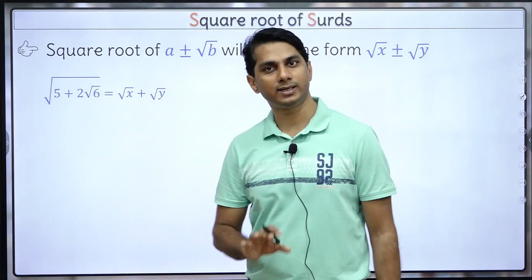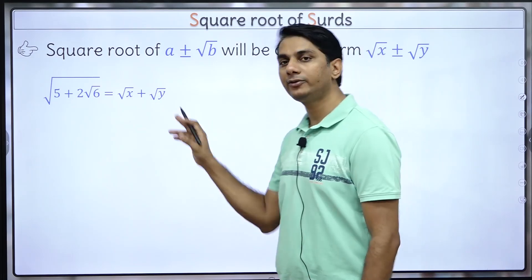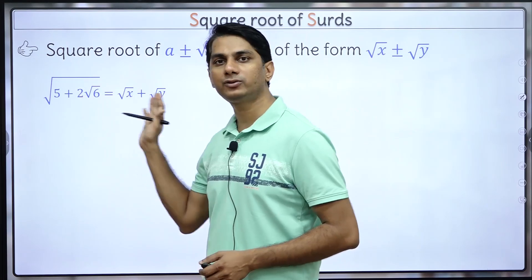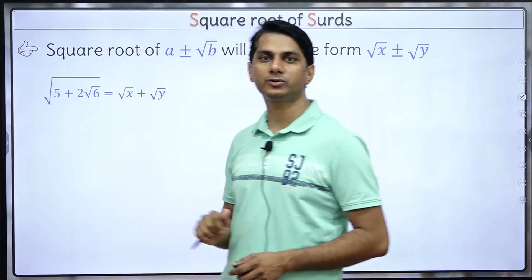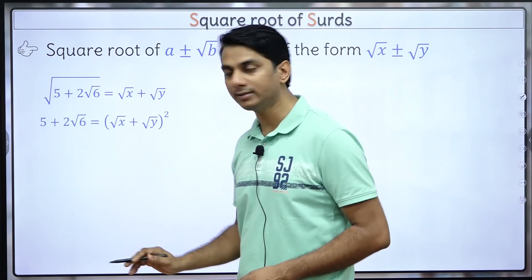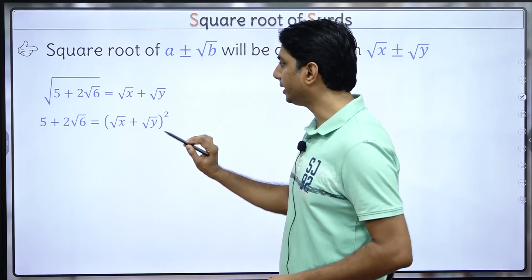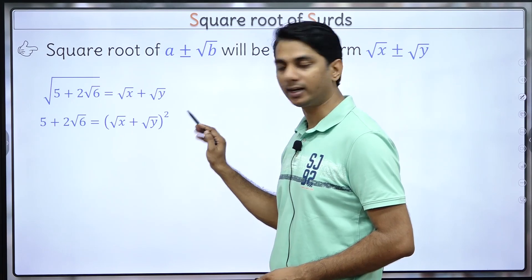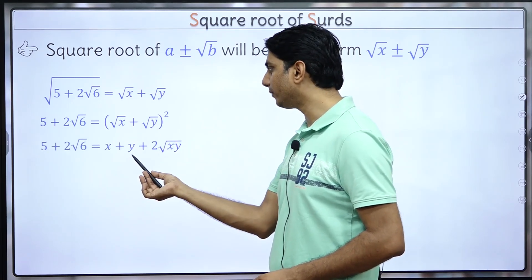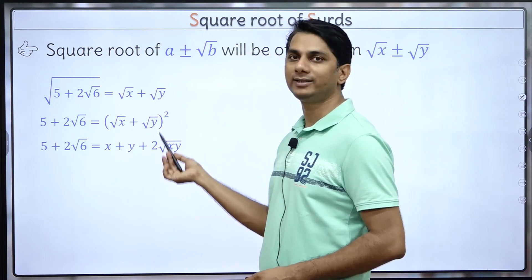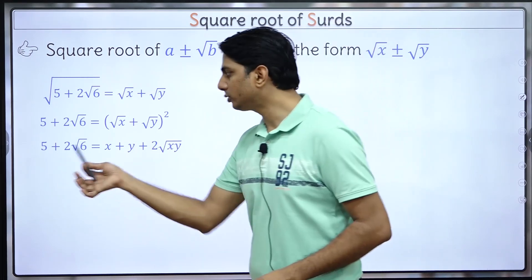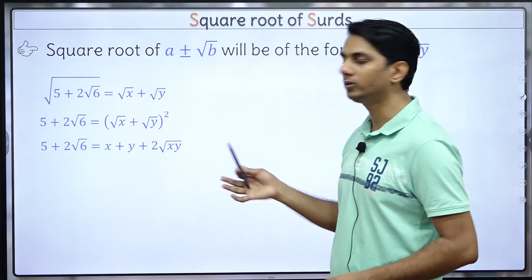The task that remains is to figure out the values of x and y. To do that, we simply square both sides. Squaring the left side gives us 5 + 2√6. Squaring the right side: (√x + √y)² = x + y + 2√(xy). So 5 + 2√6 = x + y + 2√(xy).